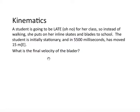All right, let's look at a common example. A student is going to be late, oh no, for her class. So instead of walking, she puts on her inline skates and blades to school. The student is initially stationary. And in 5500 milliseconds has moved 15 meters. And the E here stands for east. What is the final velocity of the blader? So this is a classic problem in kinematics, where we have to apply one of those equations. The other assumption that I didn't mention yet is that it's important to consider that all the motion has to be in one direction.